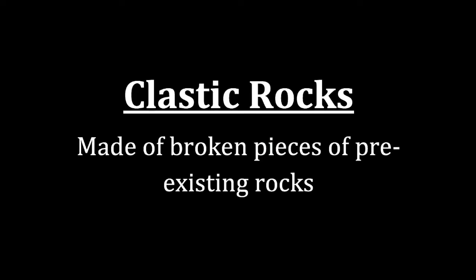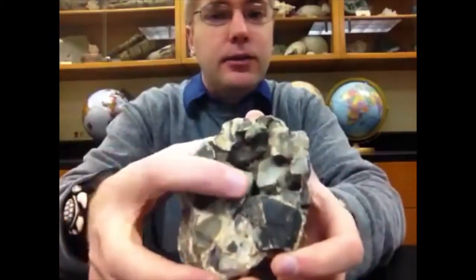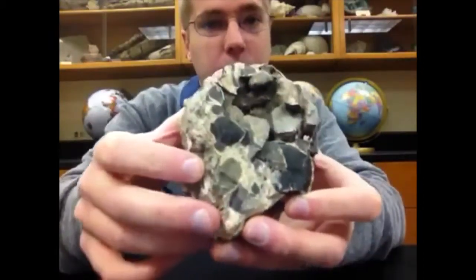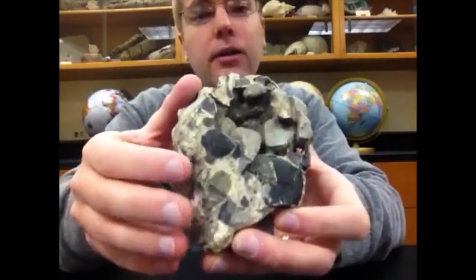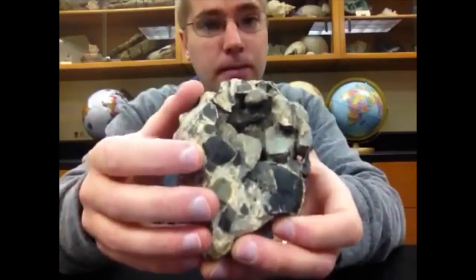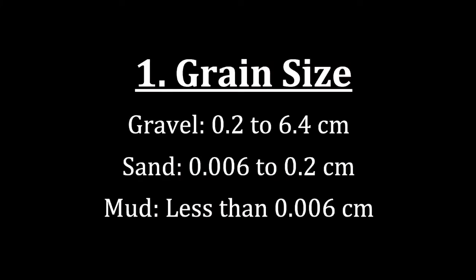Clastic sedimentary rocks are made of broken pieces of pre-existing rock. When we take a clastic sedimentary rock and look at it, we can actually see the pieces or grains that make it up, coming from other rocks that were already on the planet. Those rocks were broken up over time and then reconfigured into the rock that we're holding in our hands.